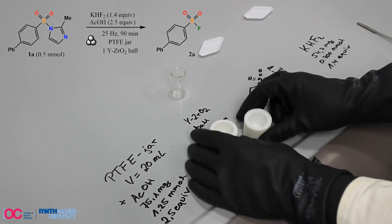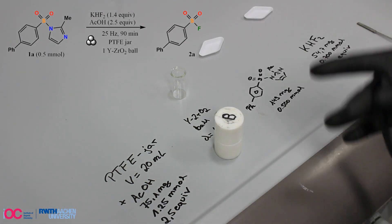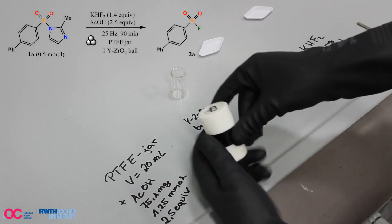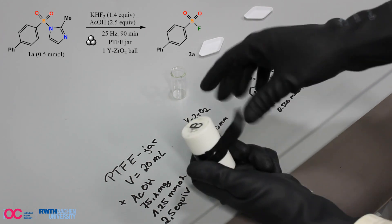After the addition of starting material 1A, KHF2 is added carefully. Please be aware that hydrofluoric acid may be formed during the addition of KHF2 to the acid. Wear protective gloves and add all reagents inside a fume hood.